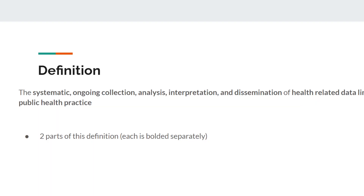So what is the definition of surveillance? This is another stock definition with multiple components, just like the definition of epidemiology, that you're going to want to know. It's composed of two different parts. The first part is the systematic ongoing collection, analysis, interpretation, and dissemination. And the second part is health-related data linked to public health practice. Combined, those two things give you public health surveillance and the whole definition.